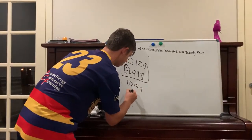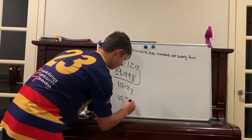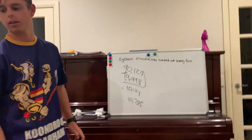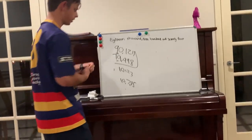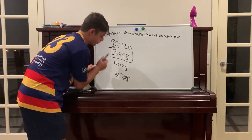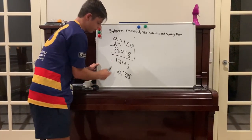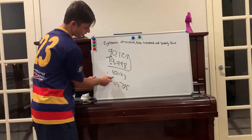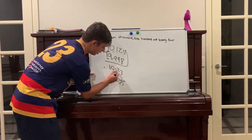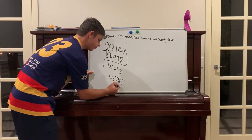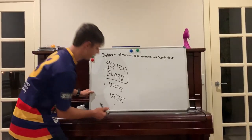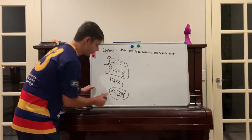For numbers like 10,123 and 10,785, using this principle: the 1 in the 10s of 1,000s is the same for both, so you go to the next value — the 1,000s. The 1,000s digit is 0 for both, so you go to the next one, the 100s. The top number has a 1 and the bottom number has a 7. We know 7 is bigger than 1, so that makes 10,785 bigger than 10,123.